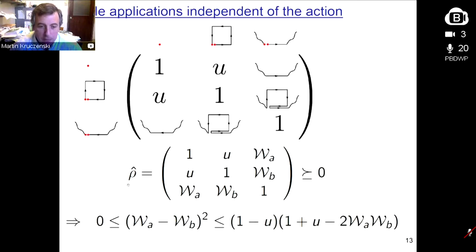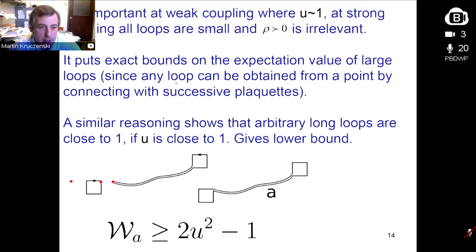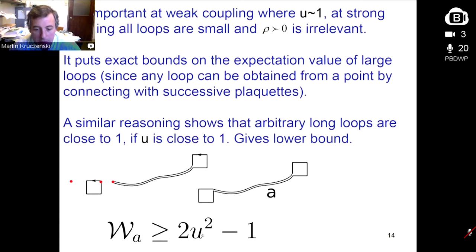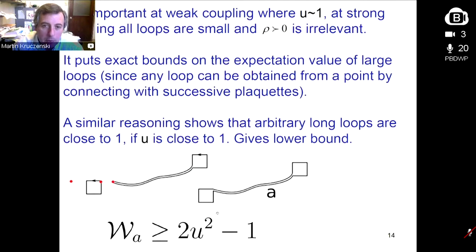There are very simple applications of these positivity conditions that are independent of the action. For example, with a null loop, a plaquette, and an arbitrary loop back to the same point: the matrix is positive definite, and its determinant should be positive. This immediately shows that at strong coupling — loops are all small — there is essentially no condition. But at weak coupling, when loops are close to one, this condition imposes severe constraints. If U is very close to one, you have that the difference between loops is small. Any loop can be obtained from a point by adding successive plaquettes, so the expectation value of any loop, if U is close to one, should also be close to one.